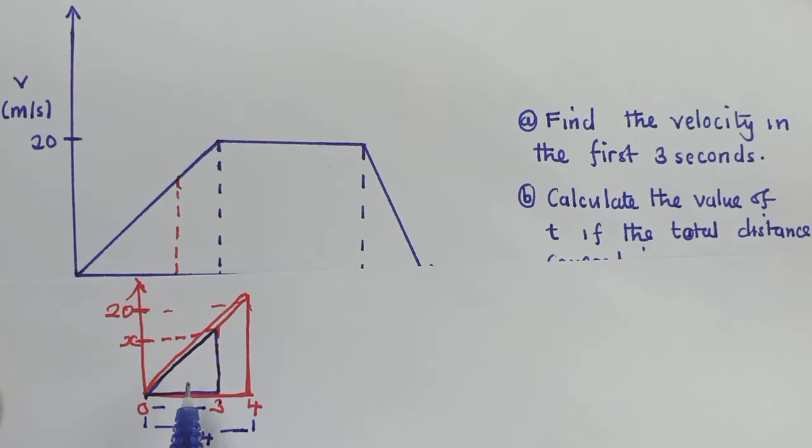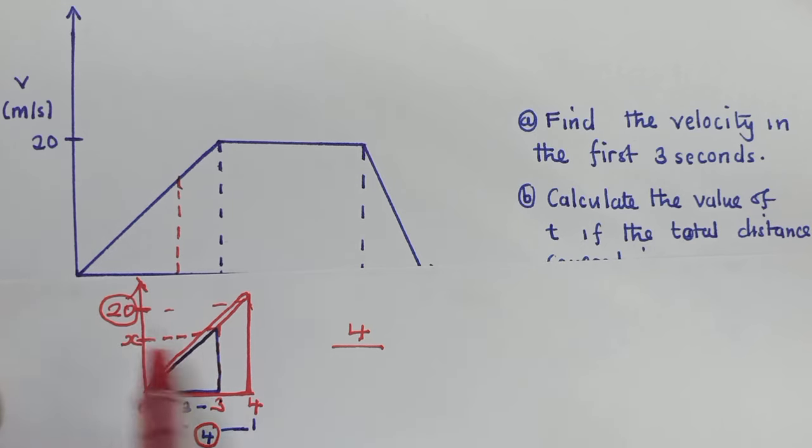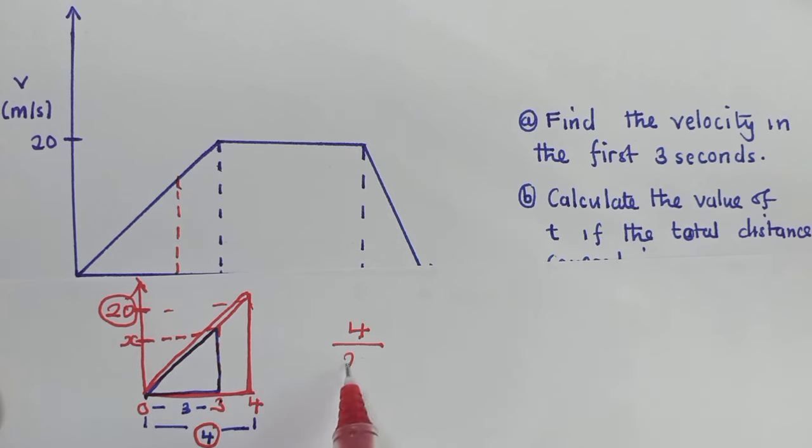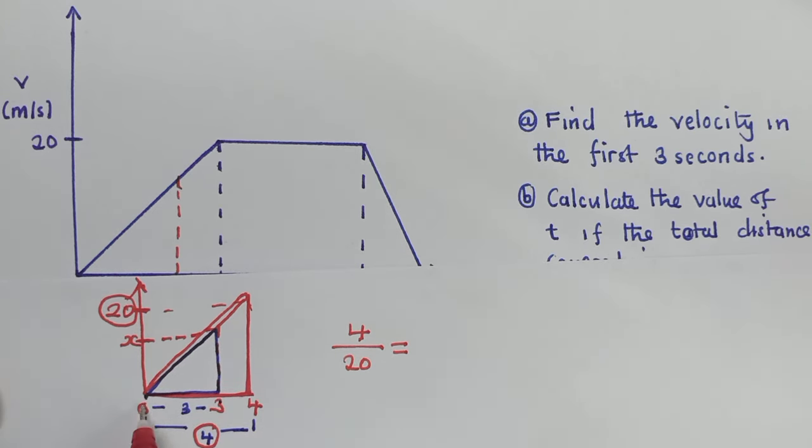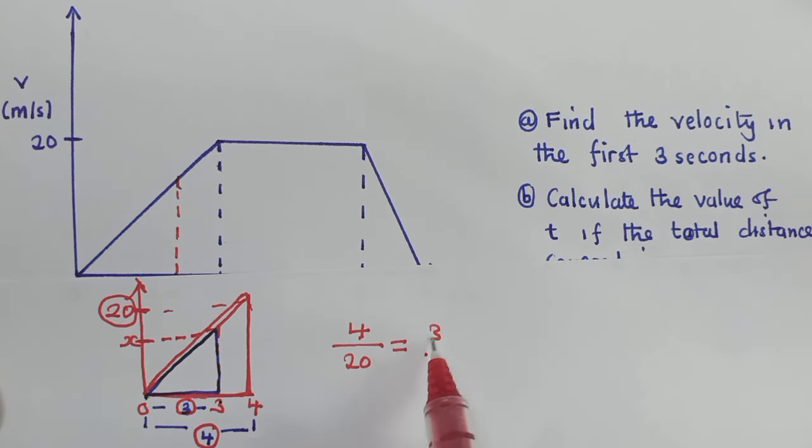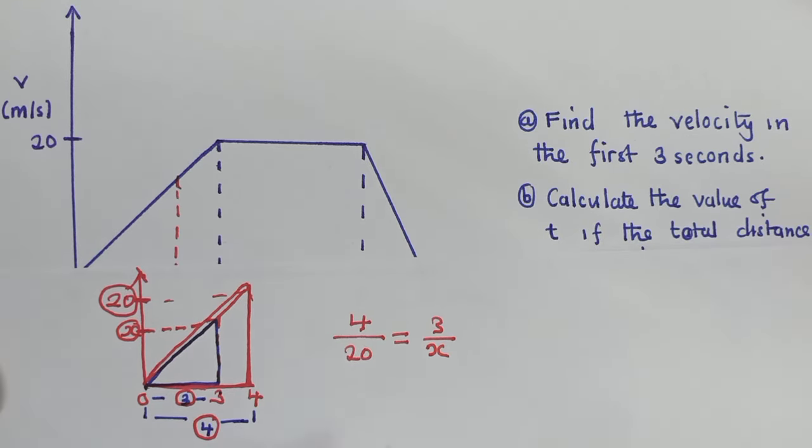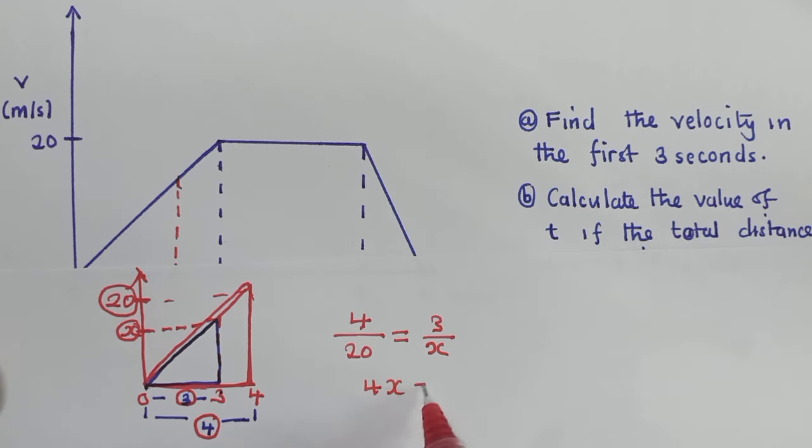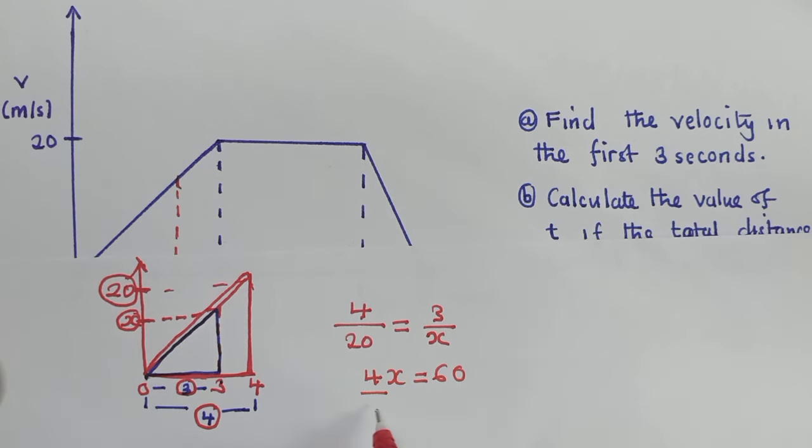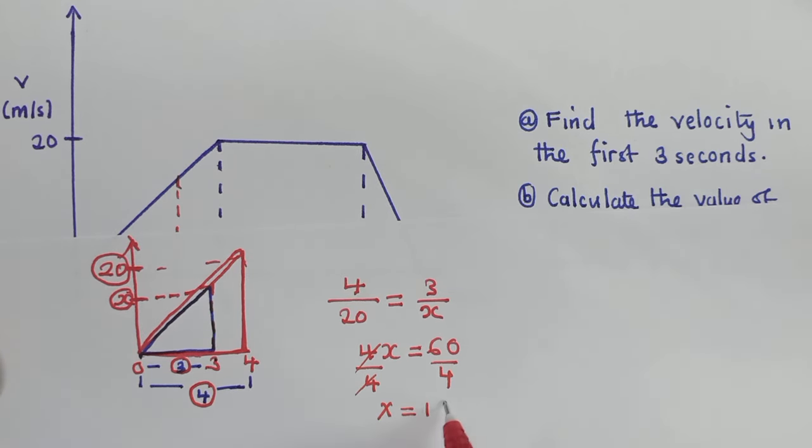We're going to find the difference from zero to three, it's three. Now from zero to four, it's four. So we get four over the velocity for the bigger triangle, which is 20, is equal to three over what we are looking for, which is x. Now from here, we can cross multiply. We have 4x equals 60, and when we divide by four, we'll get x to be equal to 15. So the velocity is 15 meters per second.